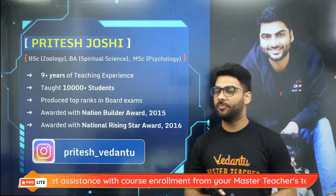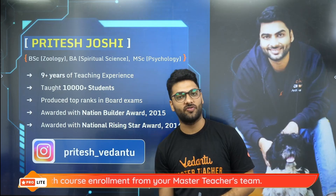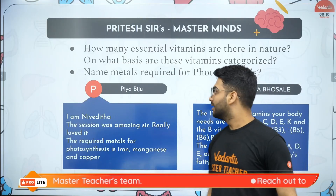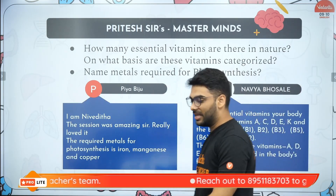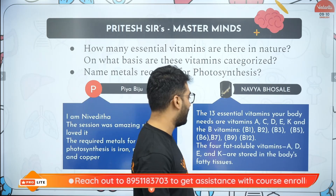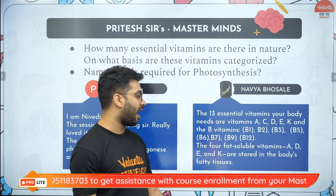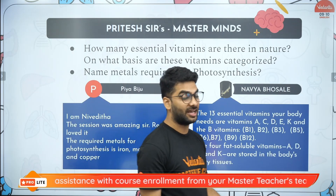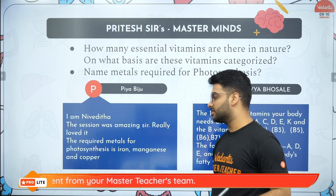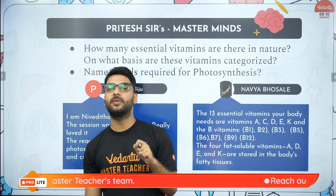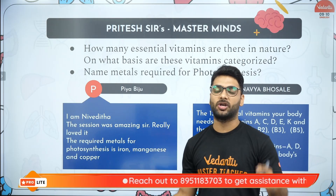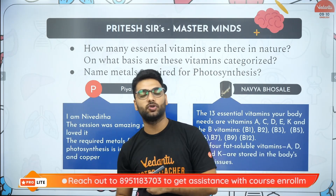My name is Pritesh and you can follow me on Instagram at Pritesh underscore Vedantu, where we can learn, grow, connect, and evolve together. These are my masterminds — those who gave me perfect answers from the previous session. Navya Bosley says the 13 essential vitamins are A, B, C, D, E, B complex, and that A, D, E, K are fat soluble whereas B and C are water soluble and not stored in the body. Pia Biju says the session was amazing and the metals required for photosynthesis are manganese and copper, but the most important one is magnesium — it enables chlorophyll to trap sunlight to do photosynthesis.